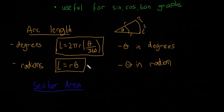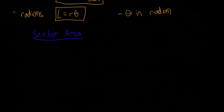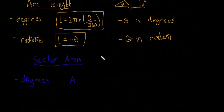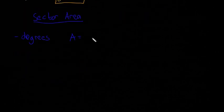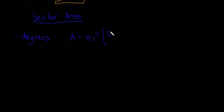Now let's look at sector area. Again, degrees first. It's the same sector, I'm not going to redraw it. A equals πr² multiplied by θ/360. Let me draw a box around that. This is where θ is in degrees.